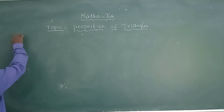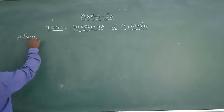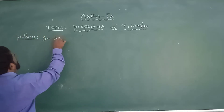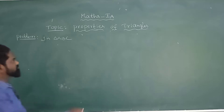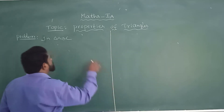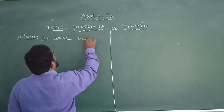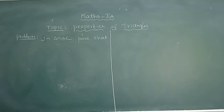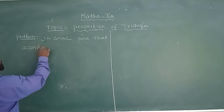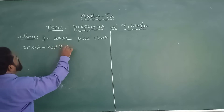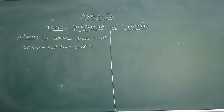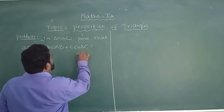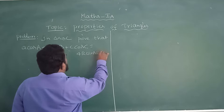In triangle ABC, prove that a·cosA + b·cosB + c·cosC = 4R·sinA·sinB·sinC.